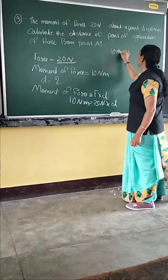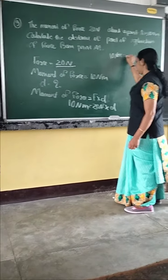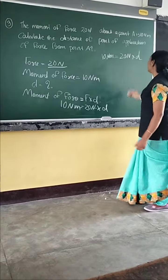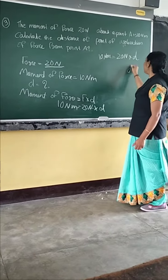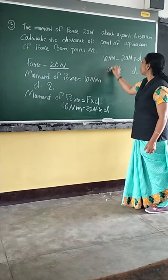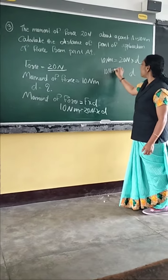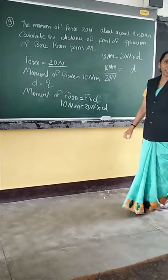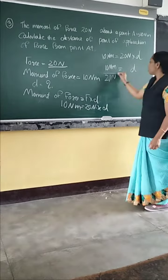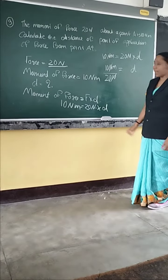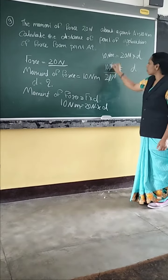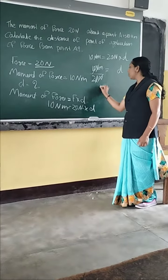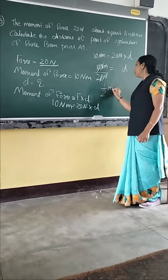So: 10 Newton meter equal to 20 Newton into distance. We want to find out distance. Distance equals 10 Newton meter divided by 20 Newton. This Newton will be cancelled, and the zeros will be cancelled.